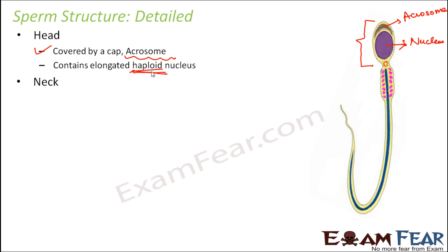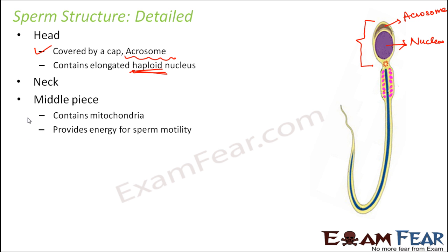The next part is the neck, where we don't have much to discuss. After that is the middle piece, which has a lot of mitochondria. Mitochondria are the powerhouse of the cell — they produce energy inside the cell. The middle piece has so many mitochondria because the sperm needs a lot of energy for movement. Just as running requires more energy than sleeping, mobility requires energy. This energy for sperm mobility is provided by the multiple mitochondria present in the middle piece.